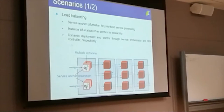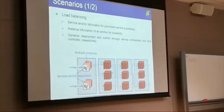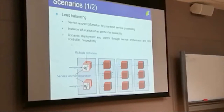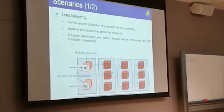For load balancing, it's very intuitive: because we have container-based deployment, we can deploy containers or anchors as per demand. We can deploy multiple instances of the same anchor, or deploy multiple anchors and have service bifurcation. For example, we can have two different anchors — one anchor takes care of all services, but if one service requires more processing in terms of delay and latency, we deploy it on a separate anchor to minimize end-to-end delay.